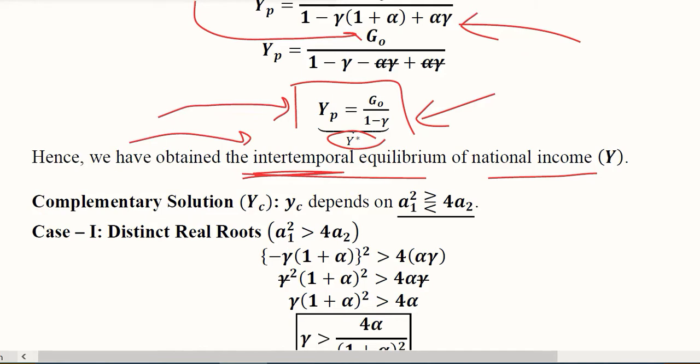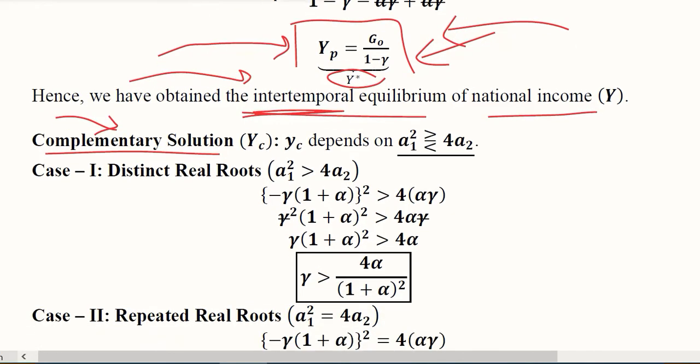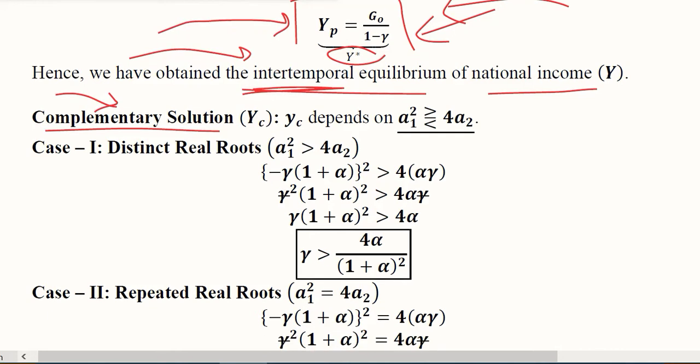This was about the equilibrium value of the particular integral. But when we talk about the dynamic solution, we have a time path which has not just equilibrium, rather the complementary or the deviation part as well. For the deviation part, primarily we check the three cases based upon the discriminant, that is A1 square minus 4A2, its value, its comparison with 0. We can write it in the form of these three possibilities.